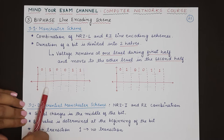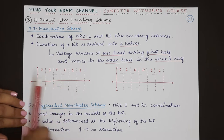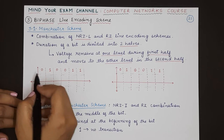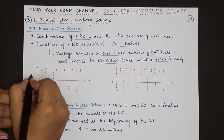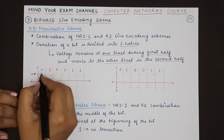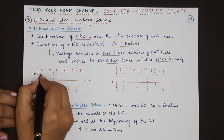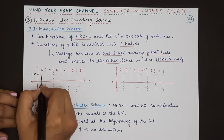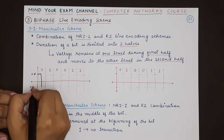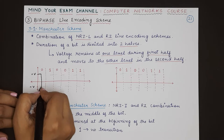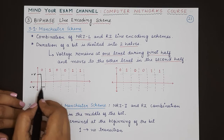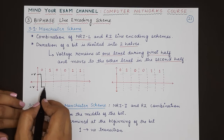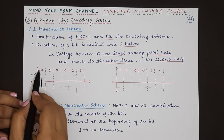In the Manchester scheme, when representing zero, we start from positive voltage, and in the middle of the bit duration we transition to negative voltage, which remains until the end of the zero bit.